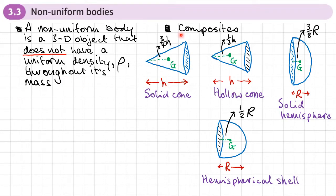Let's start by looking at 3D objects which are composites, where we've got 3D shapes made up of different parts — maybe a cone sitting on top of a hemisphere, that type of thing — and each part will have a different mass.